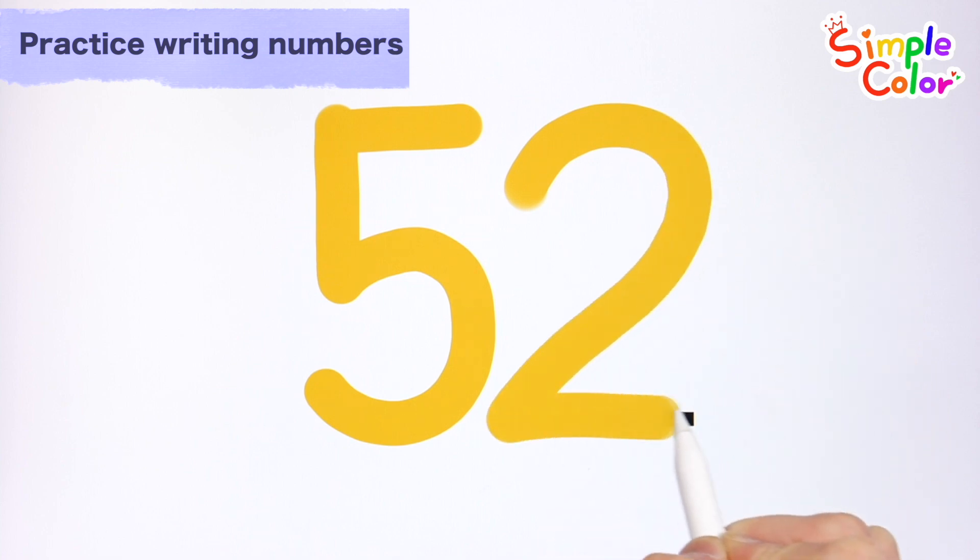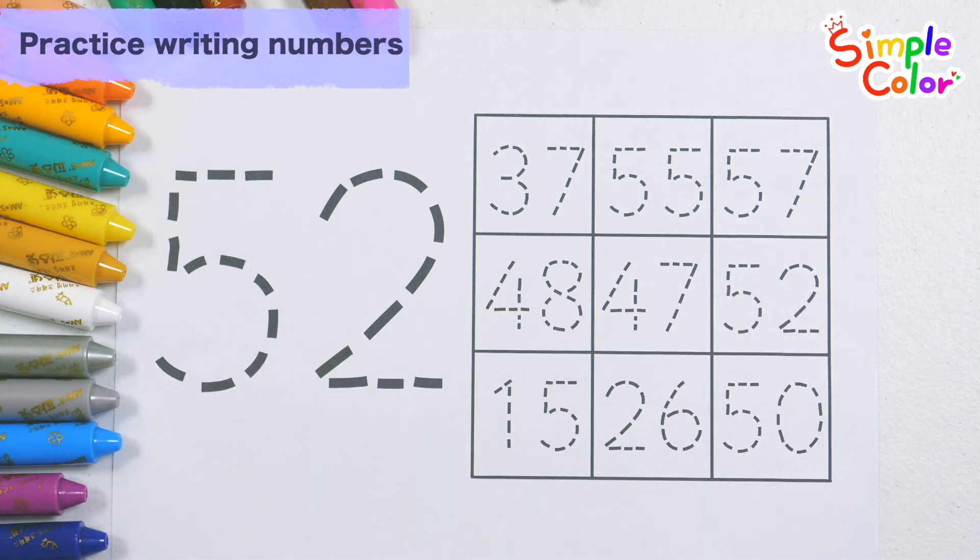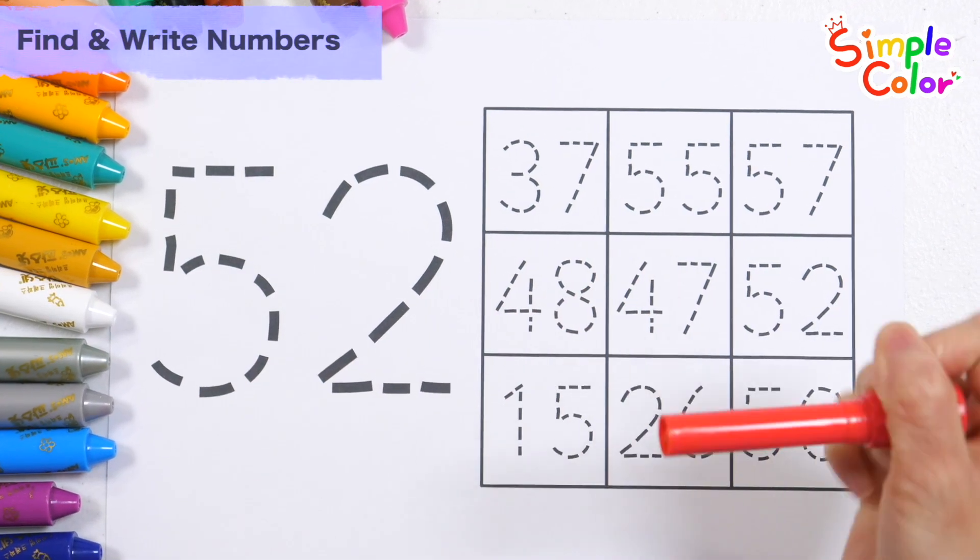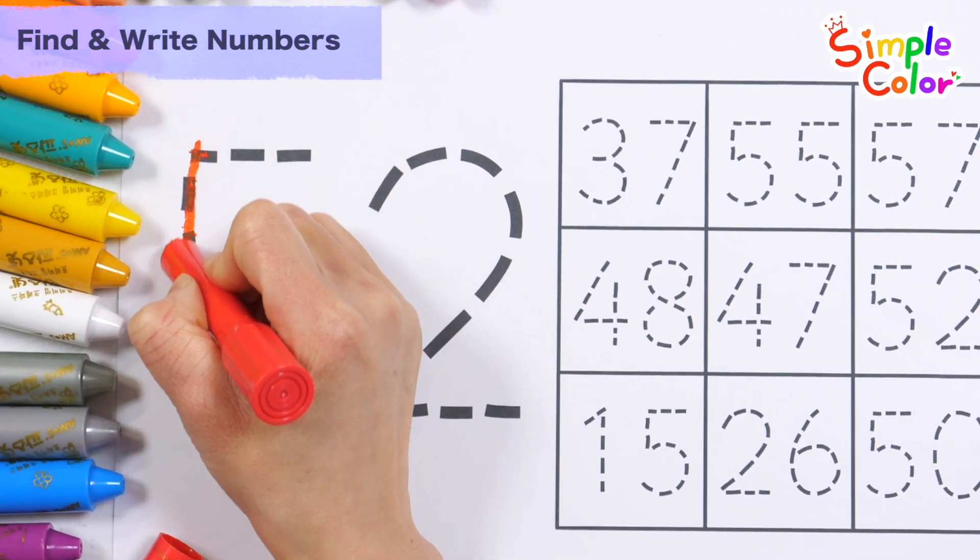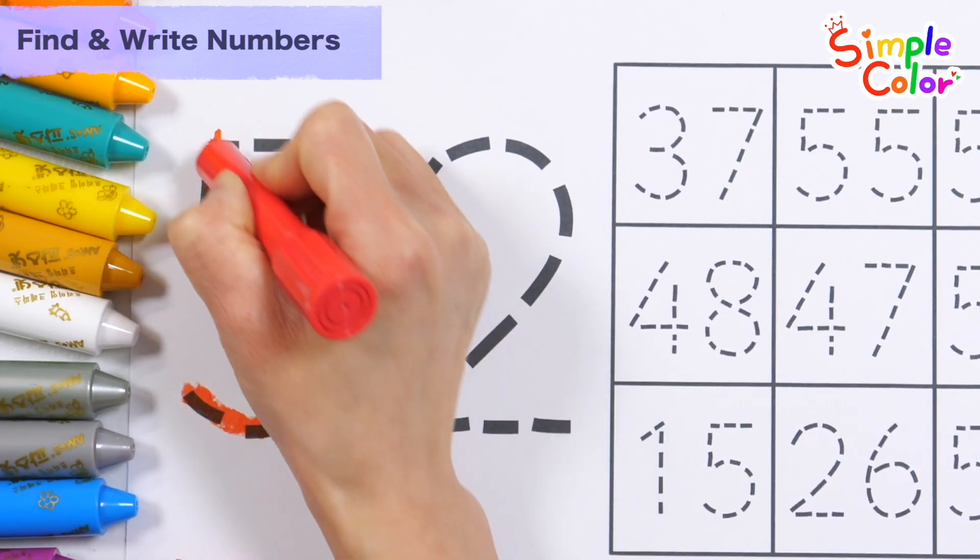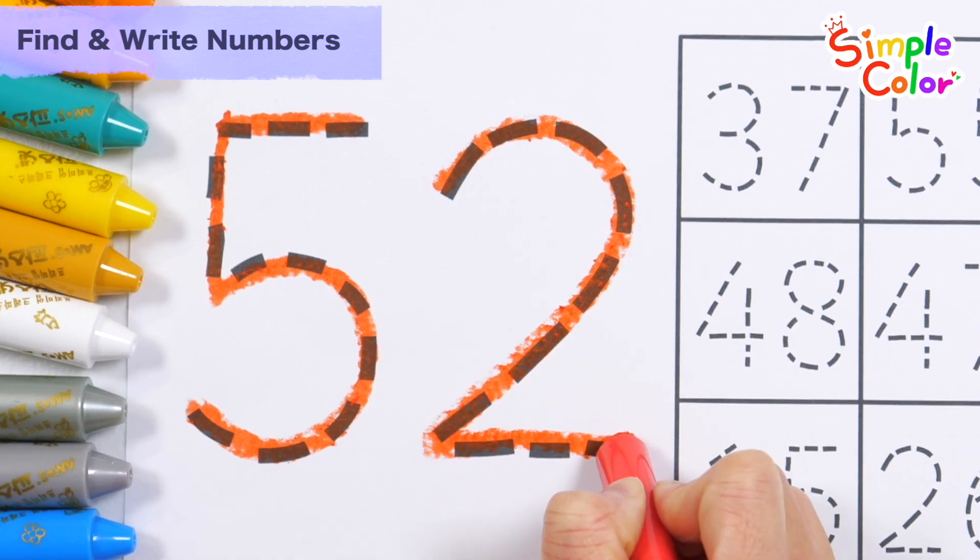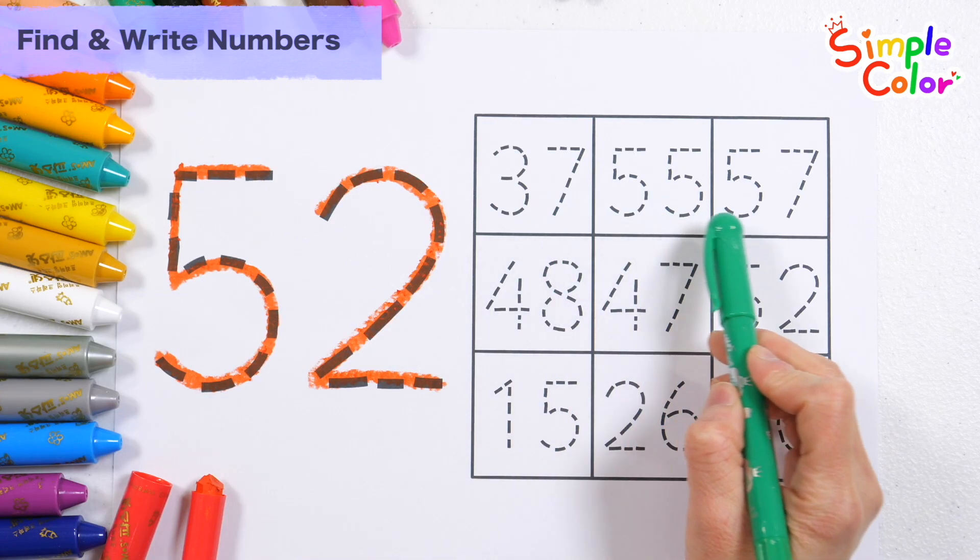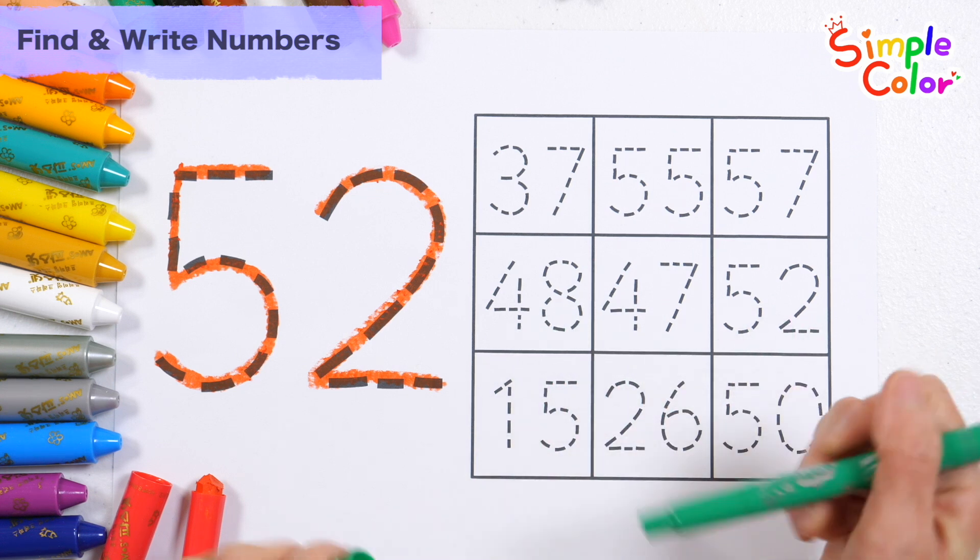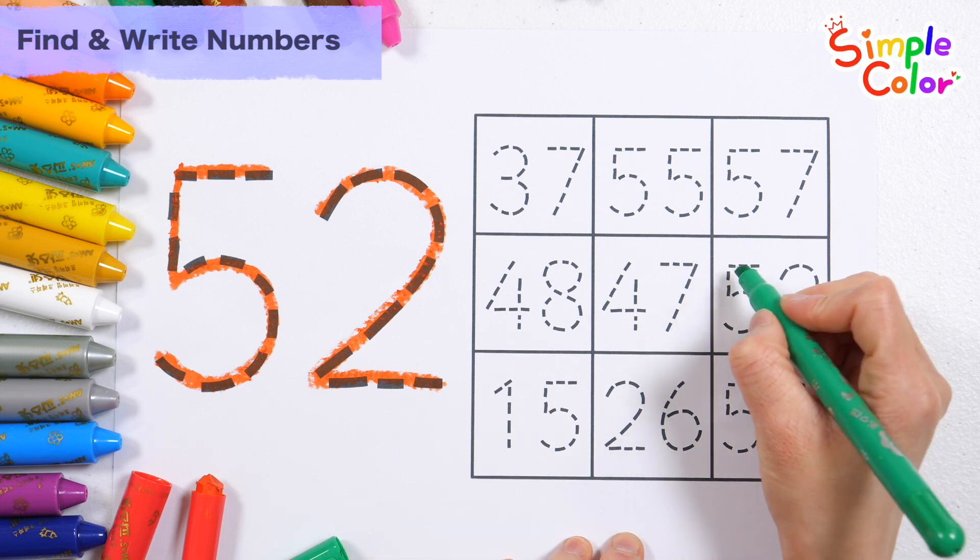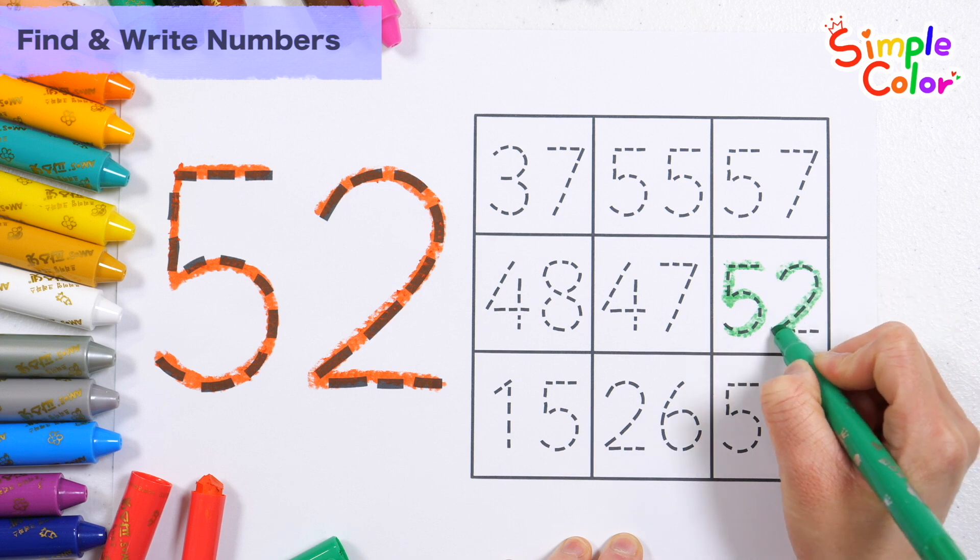52. Let's write the number 52 along the dotted line on the left. 52. Find 52 among the numbers on the right and write it down. That's right! 52. Great job!